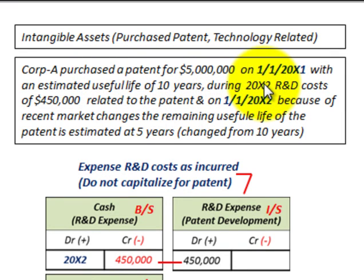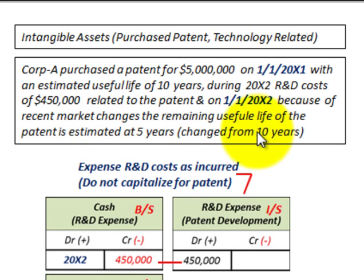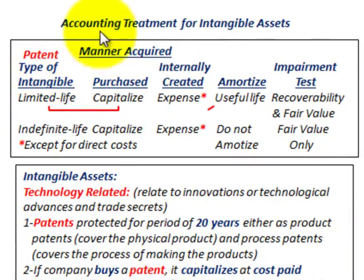During 20x2, they experienced R&D costs of $450,000 related to the patent. Also, at the beginning of the year on 1-1-20x2, because of some recent market changes, the remaining useful life of the patent is estimated to be 5 years — changed from 10 years down to 5 years in 20x2. Let's look at our accounting treatment for these intangible assets.